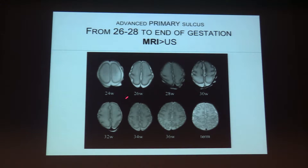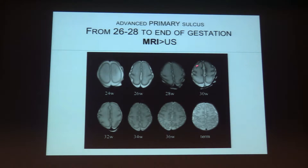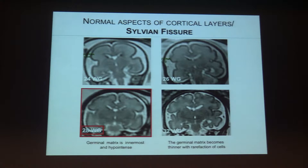After 28 weeks of gestation, the complexity of all the features will be difficult to assess with ultrasound. Thanks to the capacity of MRI to differentiate gray matter and white matter, and to achieve good differentiation between the cortex and the fluid around it, MRI will be more reliable to assess correct gyration. Here you have the evolution of the Sylvian fissure on MRI — the same aspect as shown with ultrasound — with progressive deepening and change of shape. When you have this typical pattern, you can be sure that everything is normal.